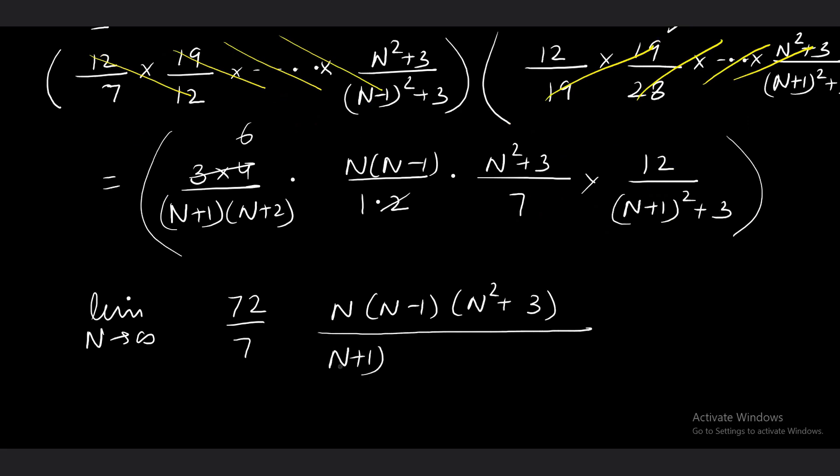Denominator is (n + 1)(n + 2)[(n + 1)² + 3]. So numerator is a polynomial, denominator is a polynomial. The degree of numerator is 4, degree of denominator is 4. Same degree, so answer is leading coefficient upon leading coefficient. The answer turns out to be 72/7.